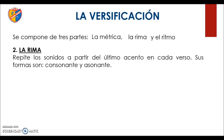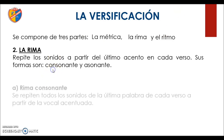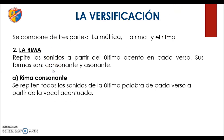Veamos entonces qué es la rima. Viene a ser la repetición de sonidos a partir del último acento en cada verso. Tiene algunas formas, como es la rima consonante y la rima asonante. Estudiaremos primero la rima consonante. Este tipo de rima consiste en la repetición de todos los sonidos de la última palabra de cada verso a partir de la vocal acentuada.